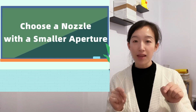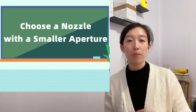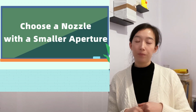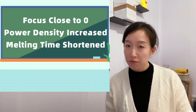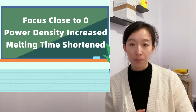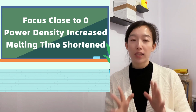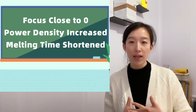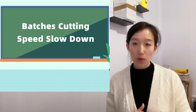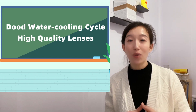Tip 4: when cutting high reflective materials, try to choose a nozzle with a smaller aperture, as this effectively prevents the laser from entering the optical cavity through the cutting head via diffuse reflection. Tip 5: under conditions that satisfy cutting quality, set the focus as close to zero focus as possible to increase laser power density, shorten the melting time, improve the material absorption rate, and avoid high reflection. Tip 6: for batch cutting, run at about 80% of the tested speed.